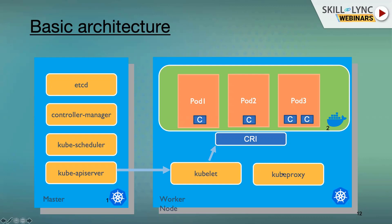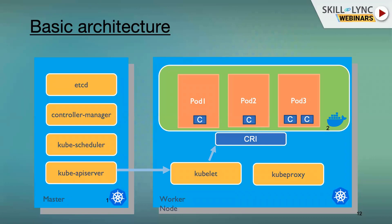Finally, kube-proxy runs on the worker node. It is a network proxy that ensures communication between containers on different nodes. All pods running on different worker nodes need to be able to reach each other — each pod has an IP, and pod-to-pod communication across worker nodes happens via kube-proxy, which handles IP management and communication between pods. It also does some load balancing when services are used.